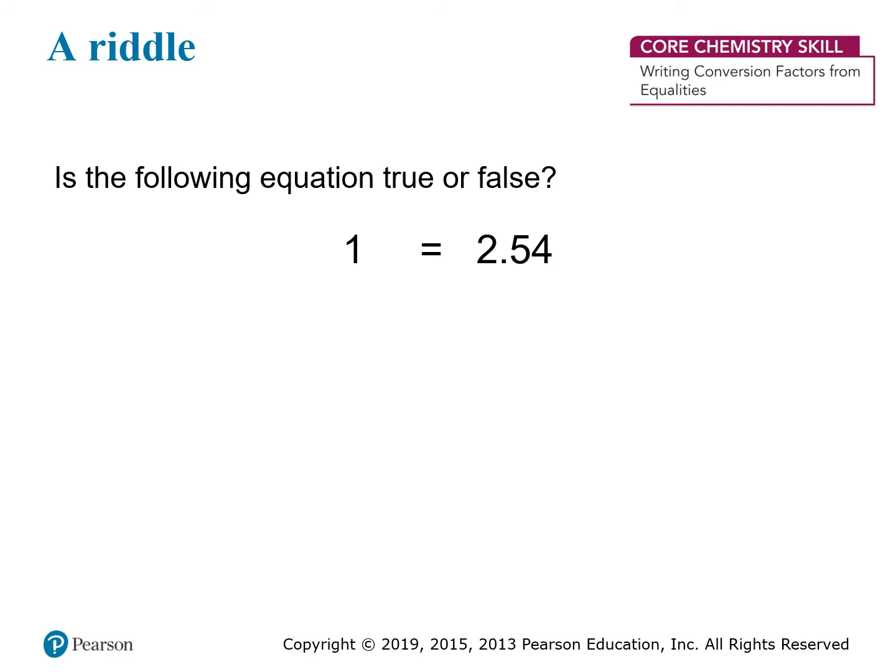Is the following equation true or false? 1 equals 2.54. If this were a math class, you would probably say that it's false and wonder why I'm asking such a silly question. In science, however, we really need to understand what we're doing with the numbers that we use. These aren't just pure numbers that come from nowhere. Every number that we use is really a measurement. So a question you should ask when you see something like this is: what are these numbers referring to?